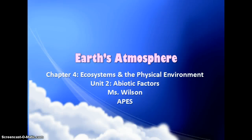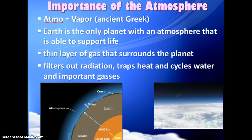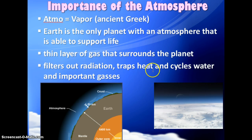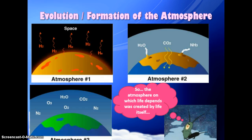Today in AP Environmental Science we're going to talk about Earth's atmosphere. The atmosphere is a really important layer, even though it's really thin. The earth itself is about 4,000 miles thick from the crust into the core, so it's surprising that our atmosphere is only about 300 miles thick, and yet it does so many important things for us.